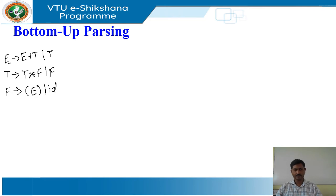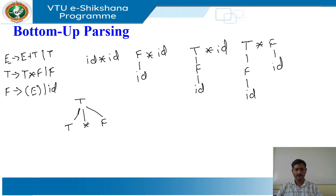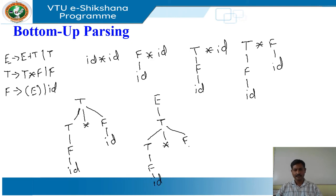The sequence of parse trees for id * id is as follows. First: id * id. Second: F → id, giving F * id. Third: T → F, giving T * id. Fourth: T * F, where the second id reduces to F. Then T → T * F, with T → F and F → id on both sides. Finally, E → T, with T → T * F, T → F, and F → id, completing the parse.